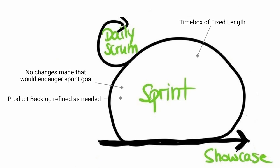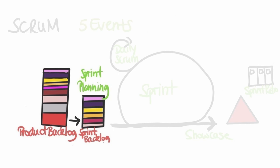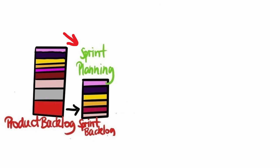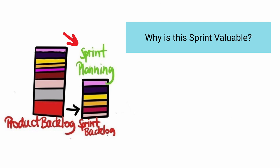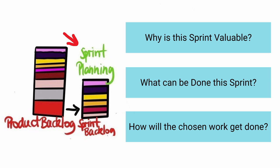Sprint planning initiates the Sprint by laying out the work to be performed. The resulting plan is created by the collaborative work of the entire team. Three questions are asked: Why is this Sprint valuable? — the product owner proposes how the product could increase its value and utility; the Sprint goal must be finalised prior to the end of Sprint planning. What can be done in this Sprint? — the team selects items from the product backlog depending on capacity and prior experience. How will the chosen work get done? — for each selected backlog item, the team plans the work necessary to create an increment that meets the definition of done. The Sprint goal, selected product backlog items, and the delivery plan together form the Sprint backlog. Sprint planning is usually time boxed to a couple of hours.